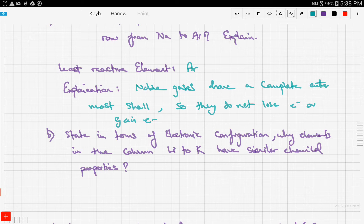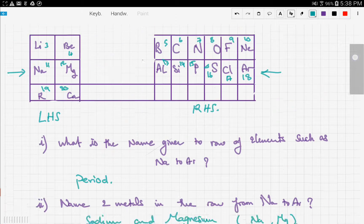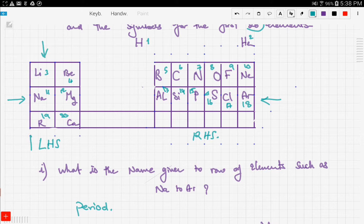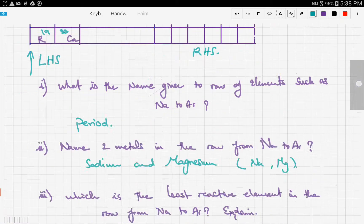Another question: state in terms of electronic configuration why elements in the column from lithium to potassium have the same chemical properties. This is the column he's talking about. We said a column is also known as a group, so he's talking about group one metals. Why do they have the same chemical